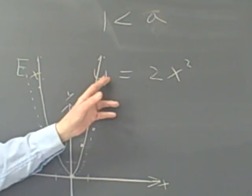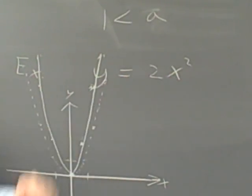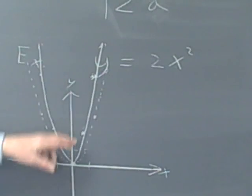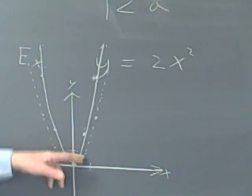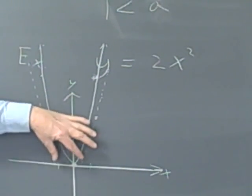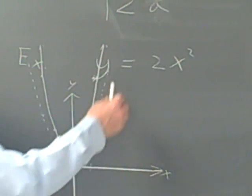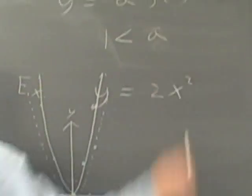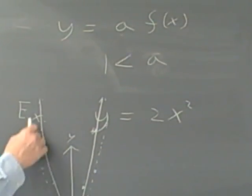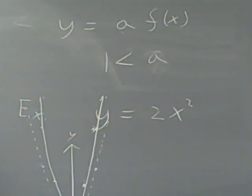If I graph the function y equals 3x squared, I'd get the same thing, but it'd even be more narrowed, because each point of this thing would be 3 times as high, and it would tend to narrow this thing out. So the way we approach these is, if you've got a constant times some function you already know, sketch the function you already know, and then look at the constant.